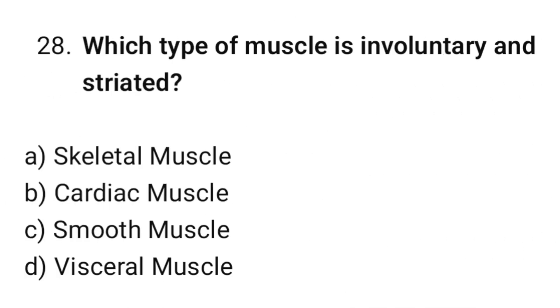Question number 28: Which type of muscle is involuntary and striated? The correct option is B. Cardiac muscle.